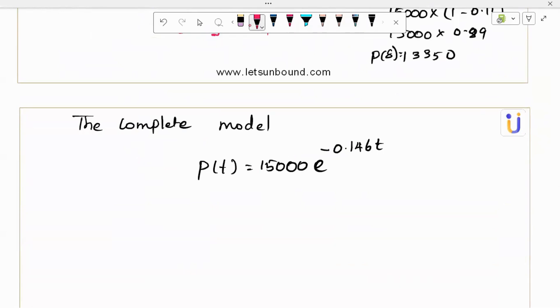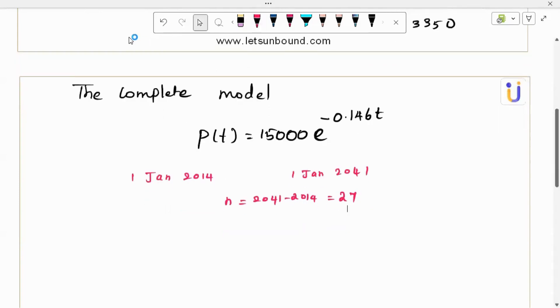And finally, we are at the part where we need to find the population on 2041, 1 Jan 2041. So this is the initial condition and n is clearly 2041 minus 2014, which is 27.